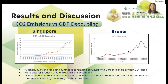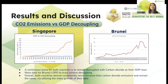Next, we have the CO2 emissions versus GDP decoupling. There is a continuous trend for both countries to remain decoupled with carbon dioxide as their GDP rises. There is more data needed for Brunei's DPO to truly achieve decoupling. Brunei's supposed reduction in the utilization of fossil fuels for energy would significantly drop and follow Singapore's negative slope regarding their DPO, as long as more data for the DPO is available. Overall, both countries almost consistently never increase their carbon dioxide emissions and remain stable using the utilization index growth of their data.